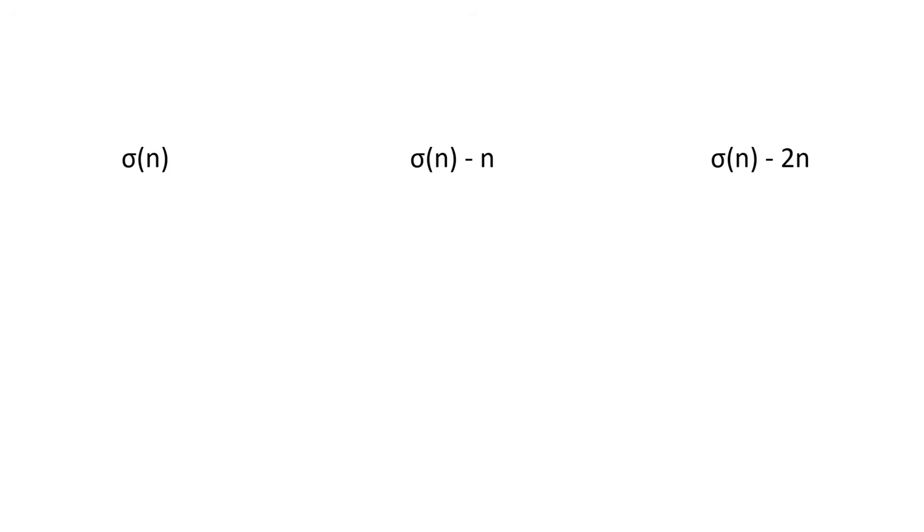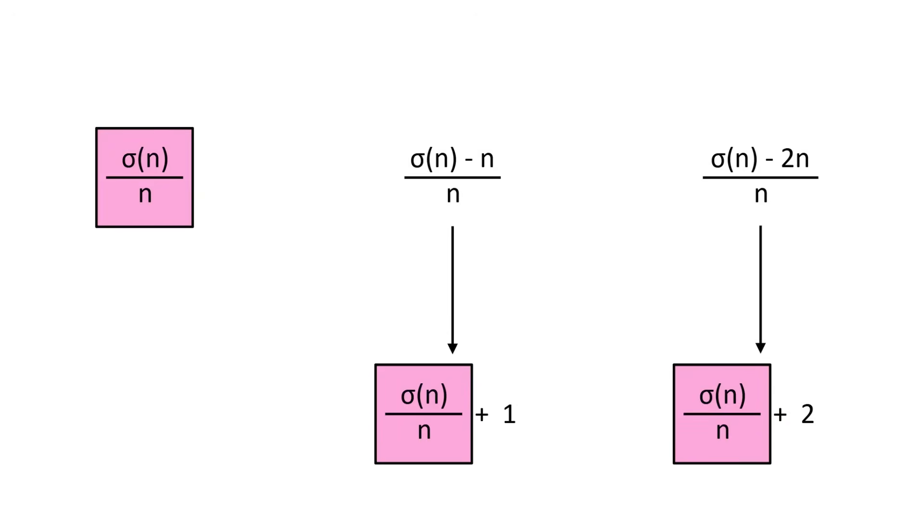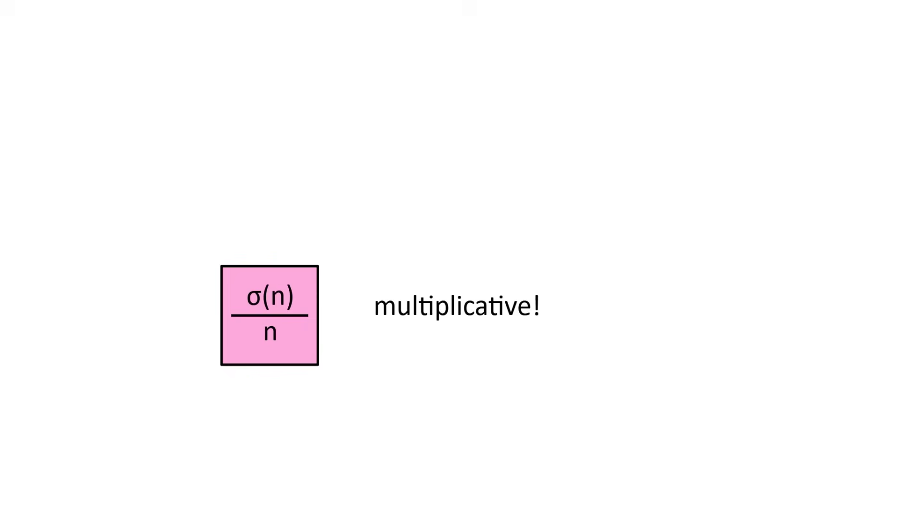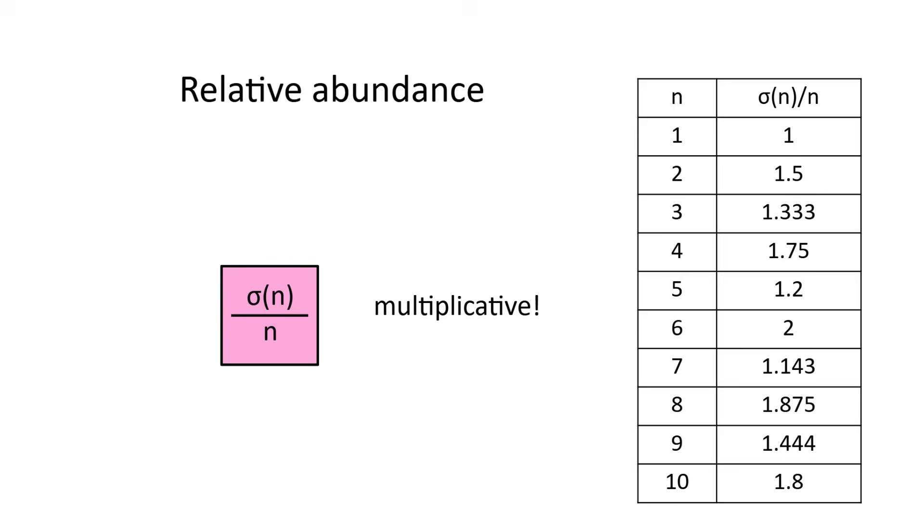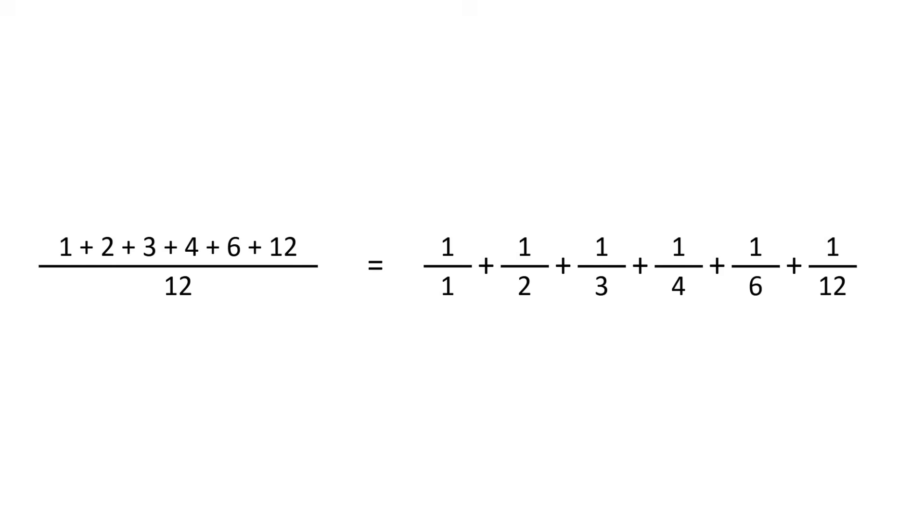We can combine the advantages of all three of these by simply dividing by n, in which case the three versions differ only by constant amounts. If we choose sigma of n over n, then the function is once again multiplicative. This is called the relative abundance of n, also known as the abundancy index. An interesting property is that sigma of n over n is actually equal to sigma negative 1 of n, which is the sum of the reciprocals of the divisors. The graph looks like this.